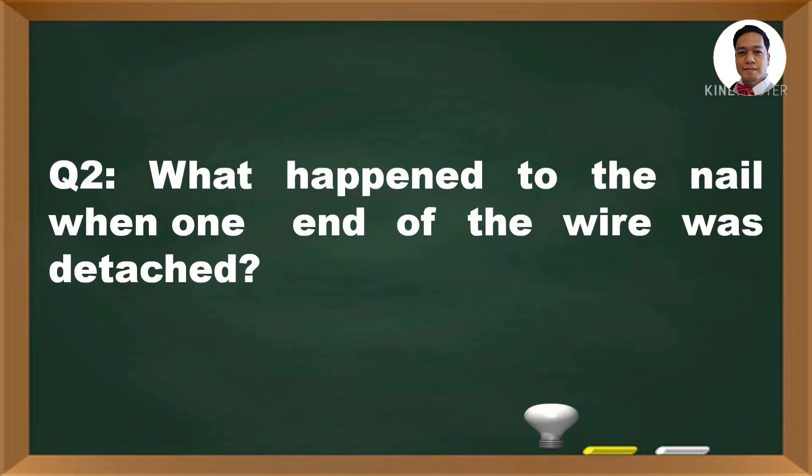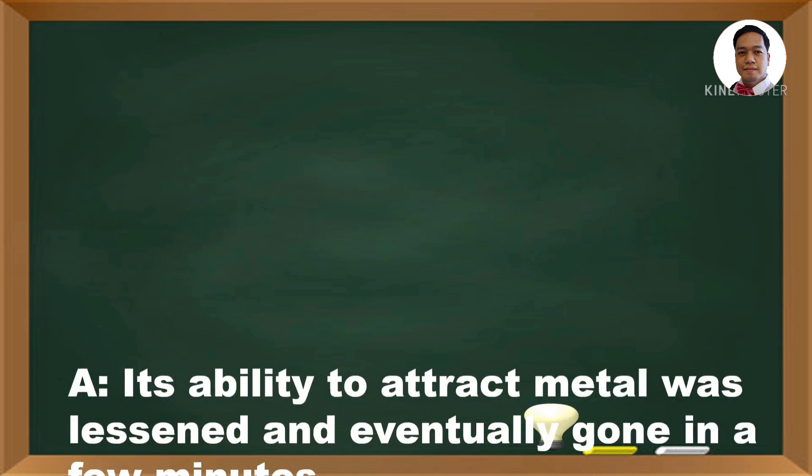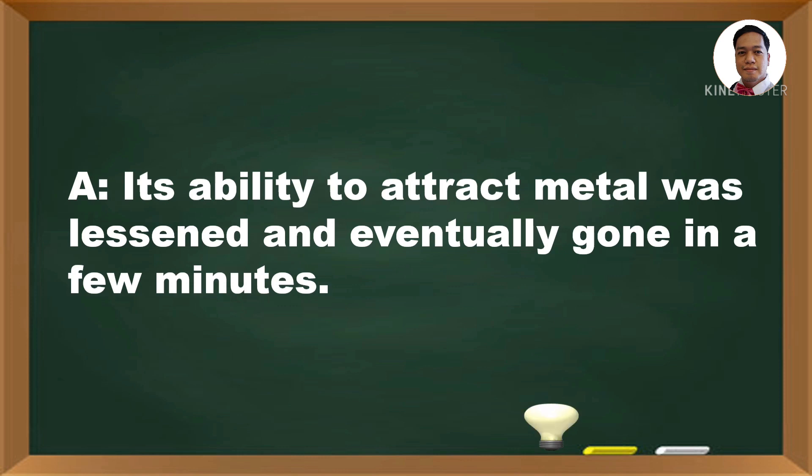Number 2: What happened to the nail when one end of the wire was detached? The answer is, its ability to attract metal was lessened and eventually gone in a few minutes.